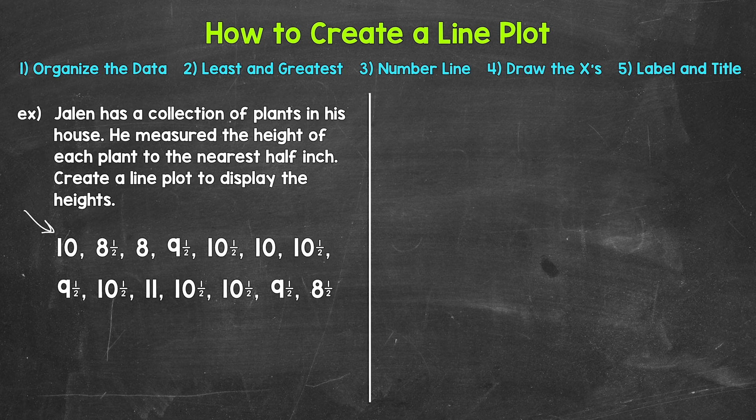When creating a line plot, the first thing we may need to do is organize our data. You may be working with data that is already organized — maybe in a table or ordered from least to greatest. If your data is already organized, you can skip this step. For this example, the data isn't organized; we just have a list of numbers in no particular order. So our first step is to organize the data from least to greatest, which will make the numbers much easier to work with.